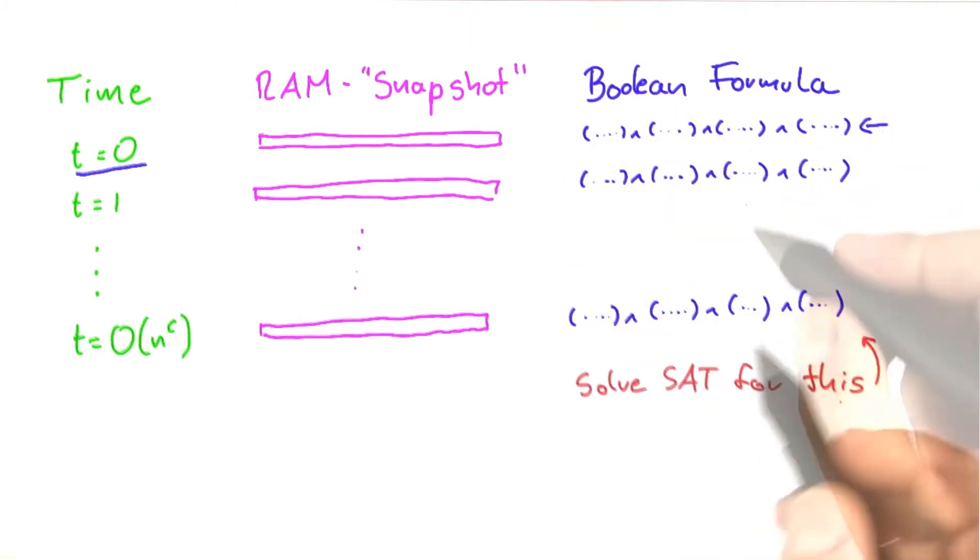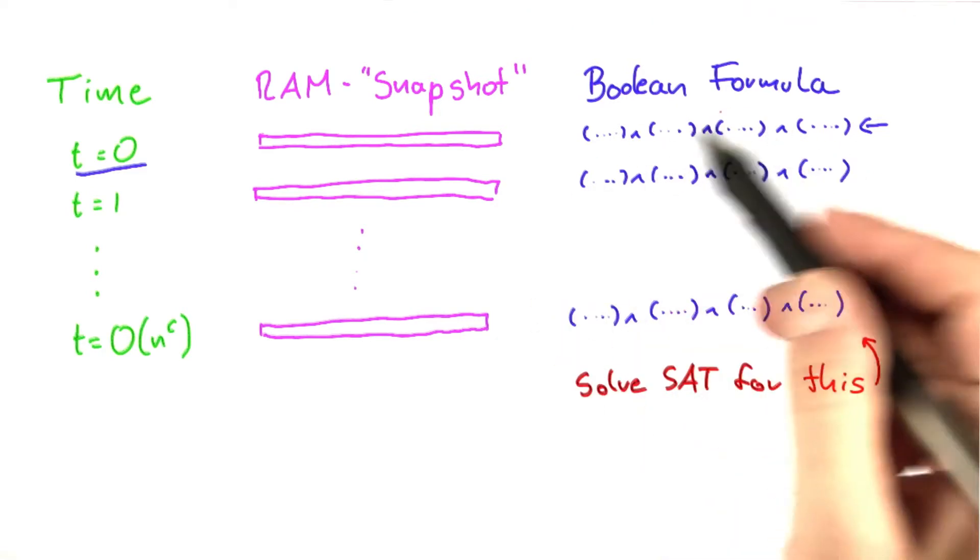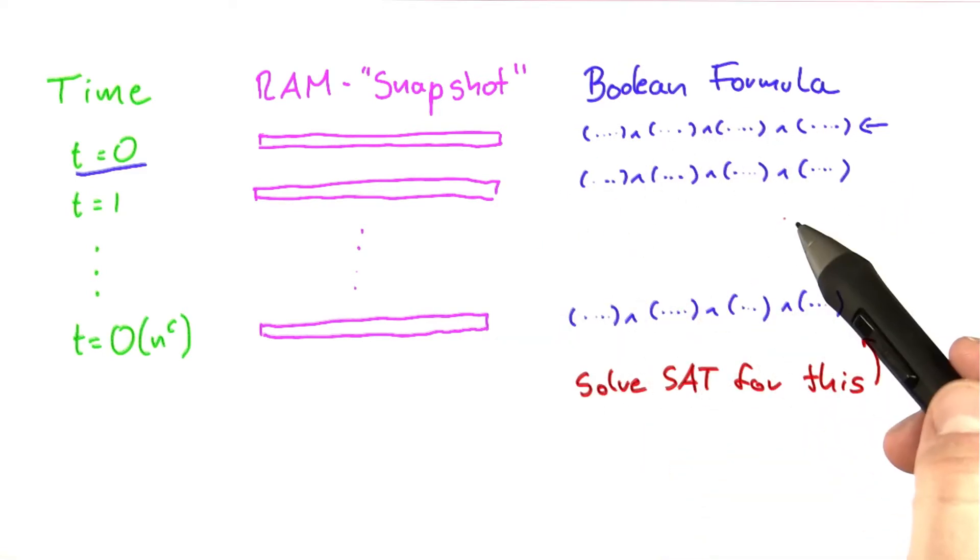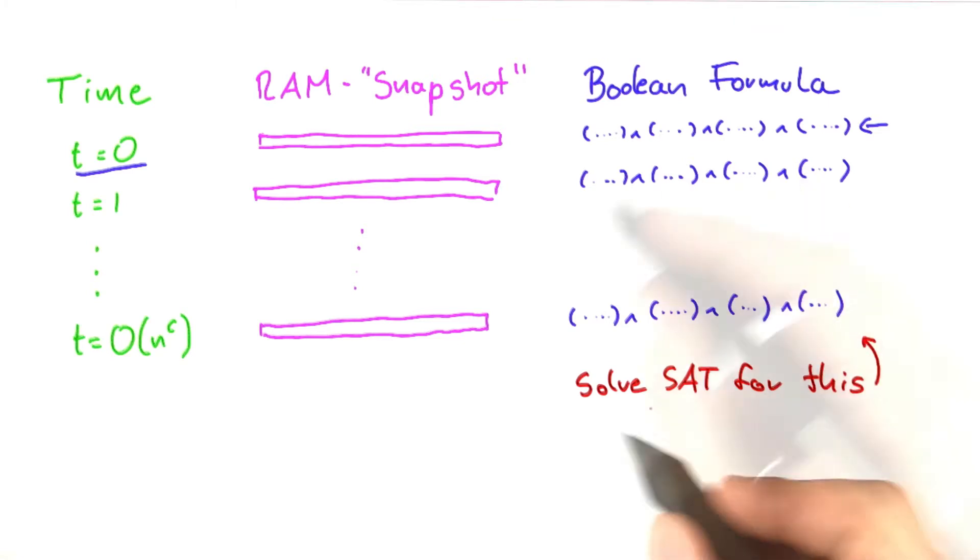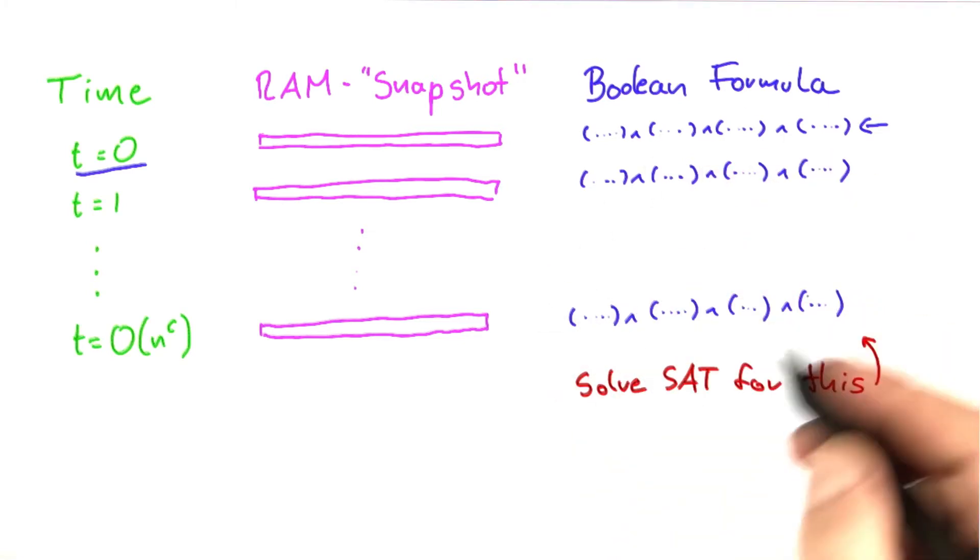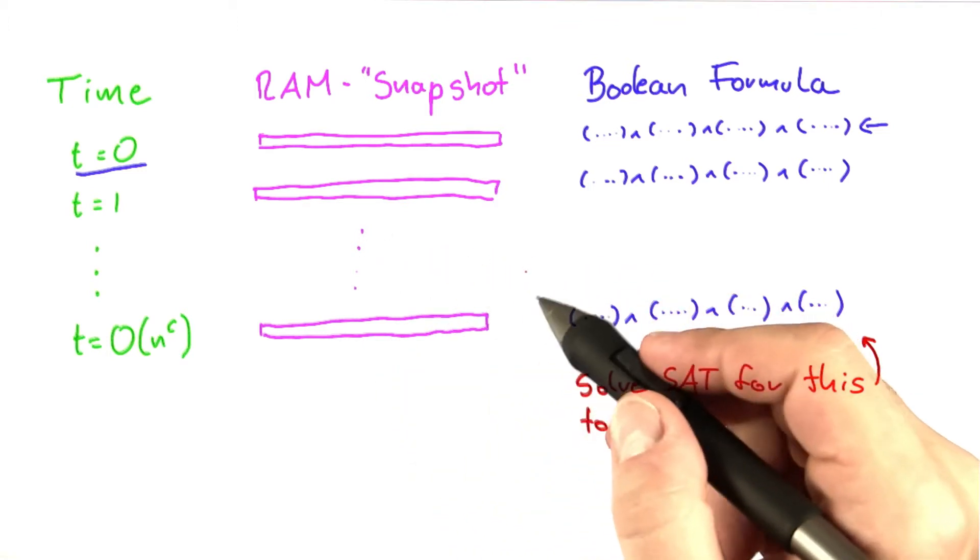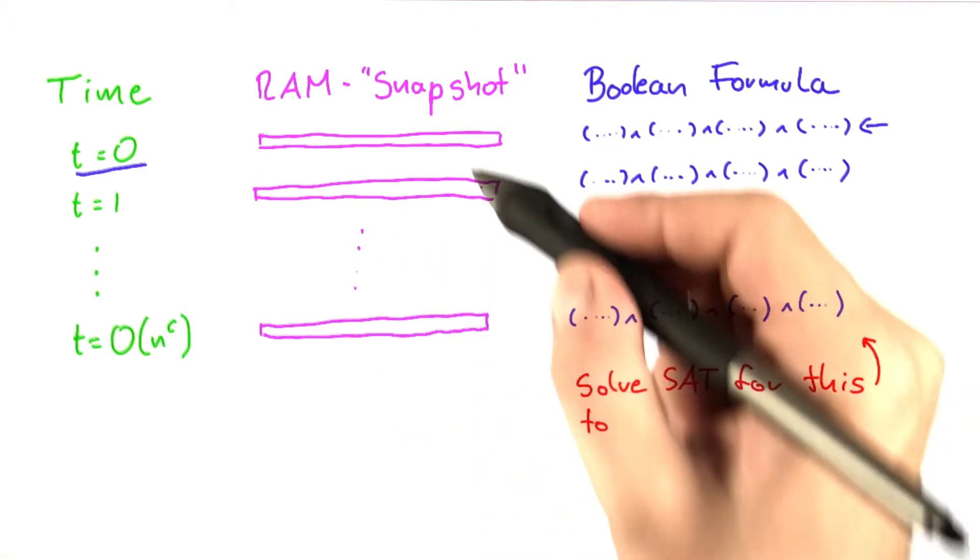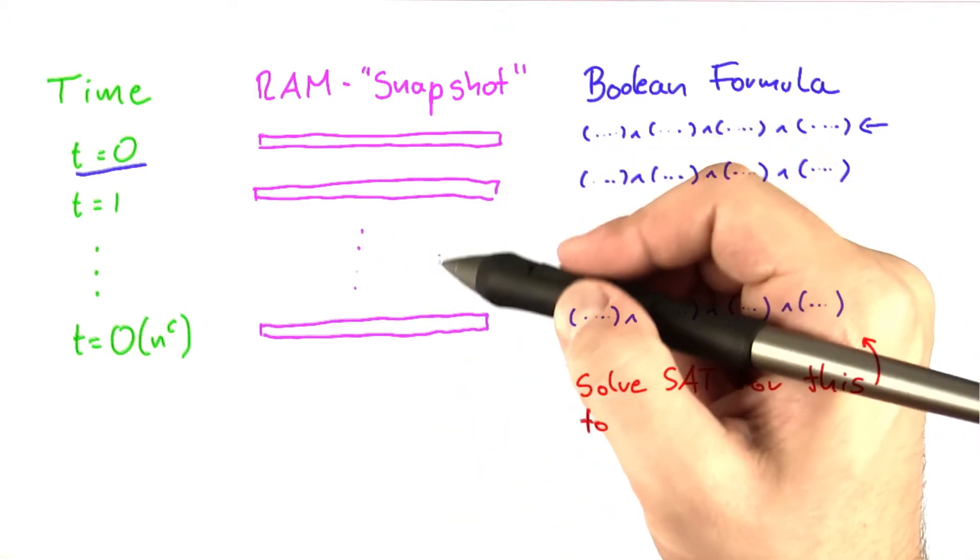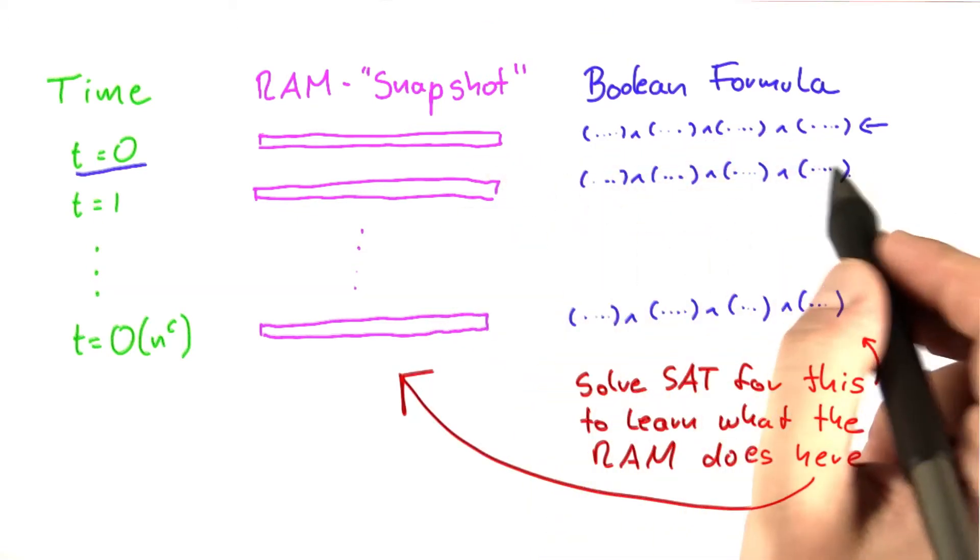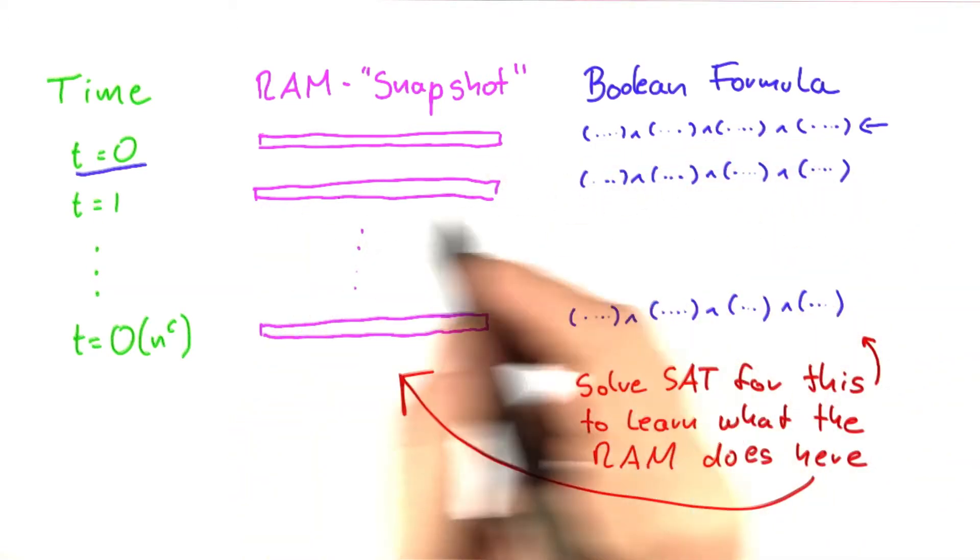Now why are we doing all this? In the end, what we want to show is, if we solve SAT for this huge Boolean formula that we're building, and we're not done yet, if we solve SAT for this formula here, then we want to know what the machine is actually doing. Or in other words, what we want to get is a protocol of what the algorithm here has done. So each of the Boolean formulas here represents a snapshot.